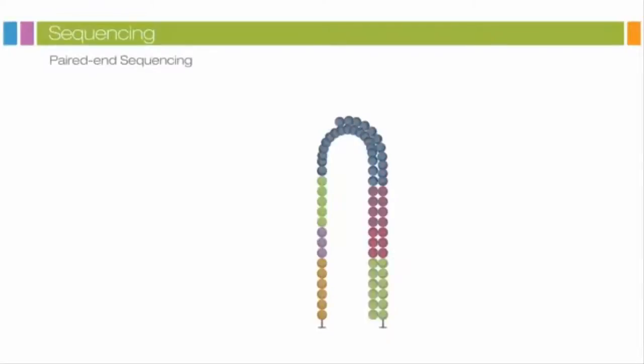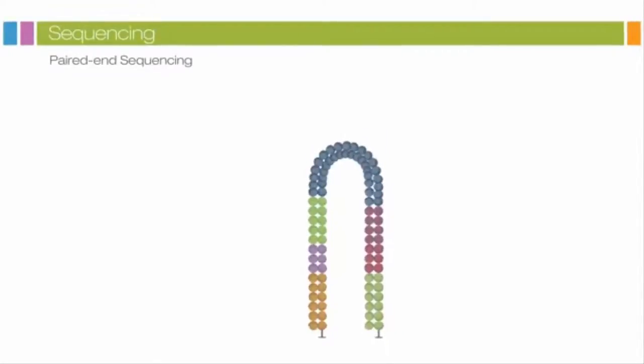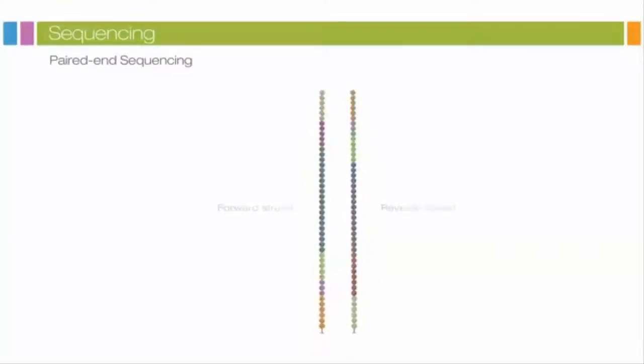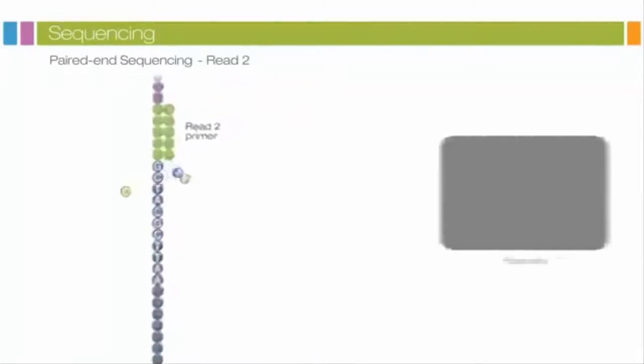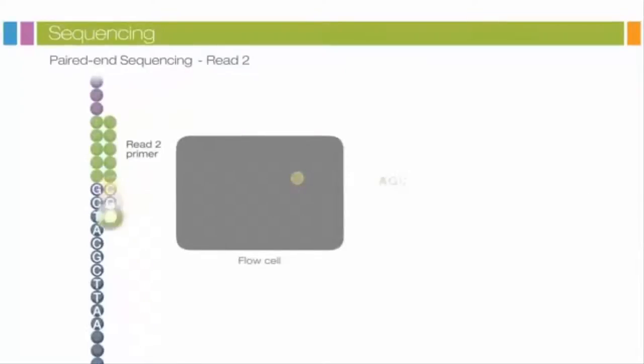Polymerases extend the second flow cell oligo forming a double-stranded bridge. This double-stranded DNA is then linearized and the three prime ends blocked. The original forward strand is cleaved off and washed away, leaving the reverse strand. Read 2 begins with the introduction of the Read 2 sequencing primer. As with Read 1, the sequencing steps are repeated until the desired read length is achieved.